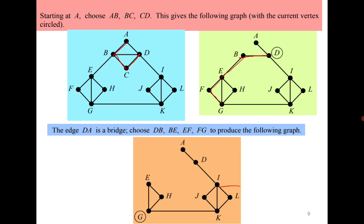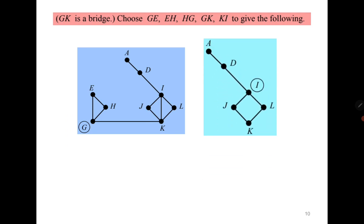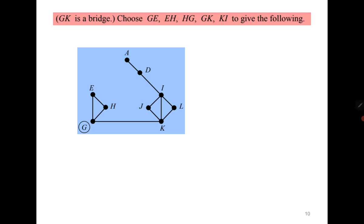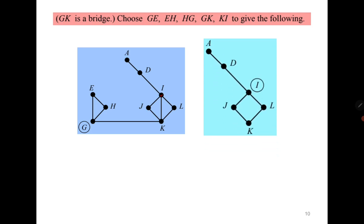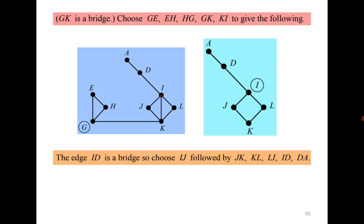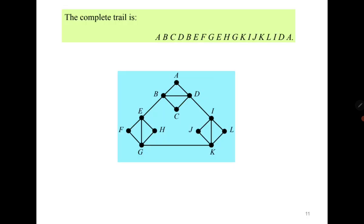I reach G. From G, alphabetically, there is a path to E and E comes first, so I go to E, then E to H, H to G, and G to K. From K, alphabetically considering I, J, K, L, I should go to I. From I, alphabetically I should go to D, but again it is a bridge, so instead I go to J, then J to K, K to L, L to I, and from I then to D and A — giving the required Euler circuit.